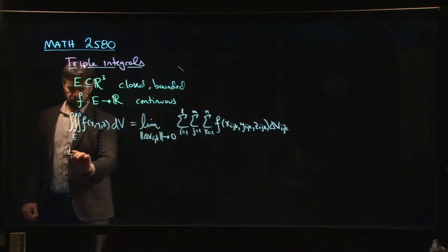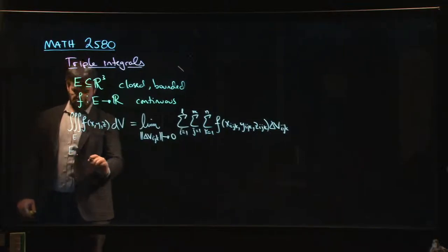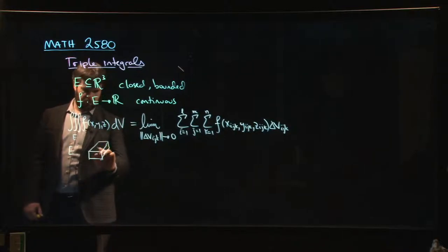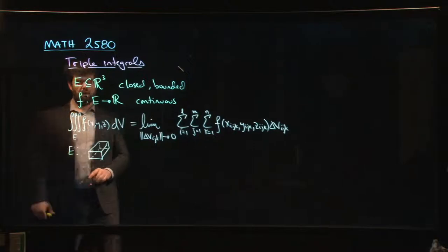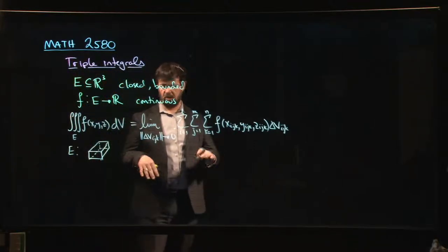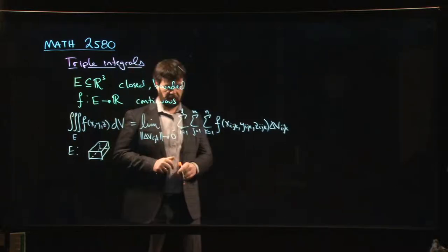Well, this is for the case where E is kind of like a box, a rectangular box. Something like that. So maybe X goes from A to B, Y goes from C to D, Z goes from, I don't know, S to T, something like that.